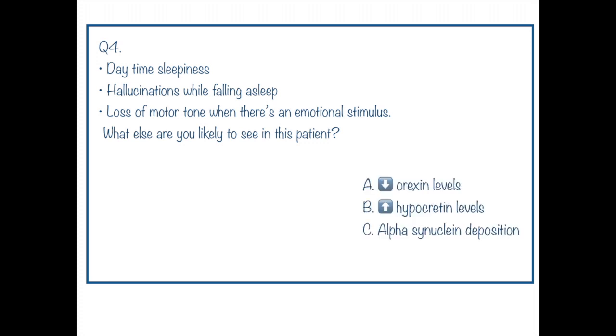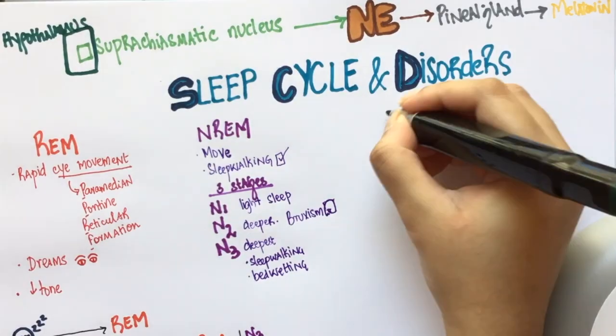Option A, low orexin levels. Option B, high hypocretin levels. Option C, alpha-synuclein deposition. The answer to this question is low orexin levels. This patient is likely to have narcolepsy.